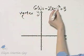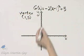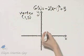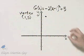Our new vertex is at 1, 5. So the vertex is moved 1 to the right and 1, 2, 3, 4, 5 up. That's the vertex.